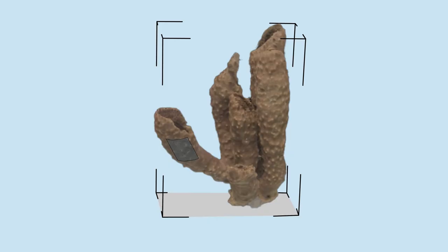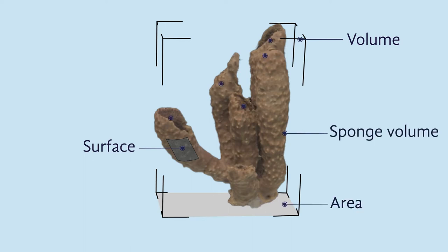With this procedure we ensured sufficient overlap between each photo and adequate information from each view to reconstruct the sponge. Once the models were ready, it was possible to calculate the total volume, surface, sponge volume, area, and number of tubes of each sponge. Finally, with all those values a complexity index was generated to summarize them and test whether area or complexity is most correlated with sponge-dwelling species richness.